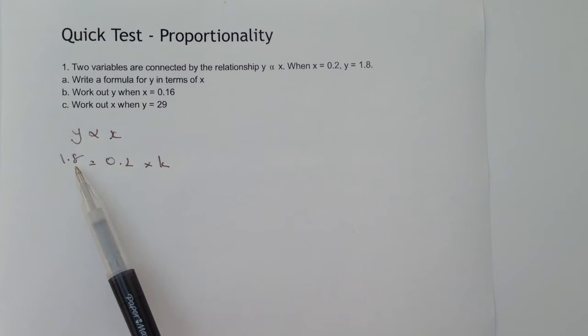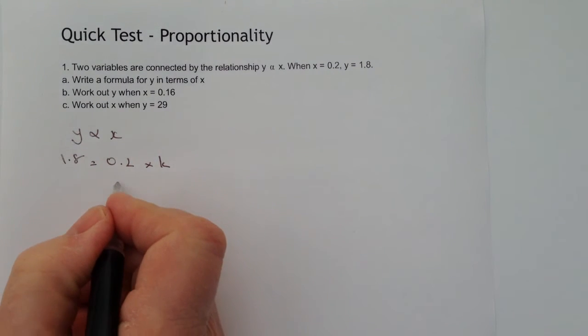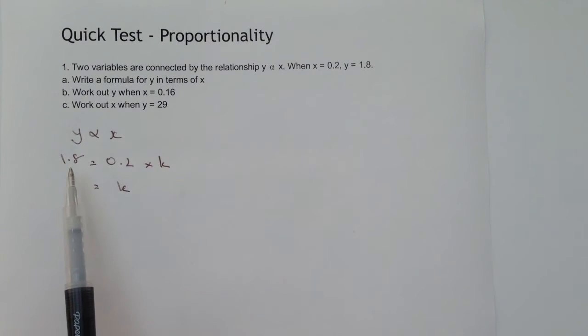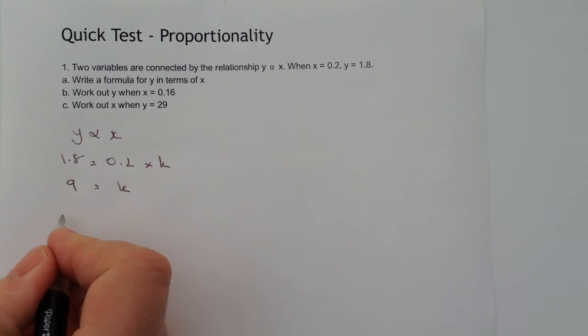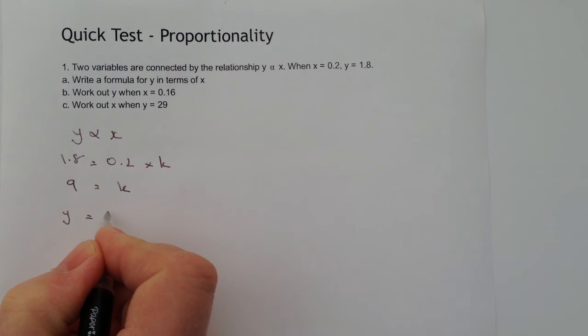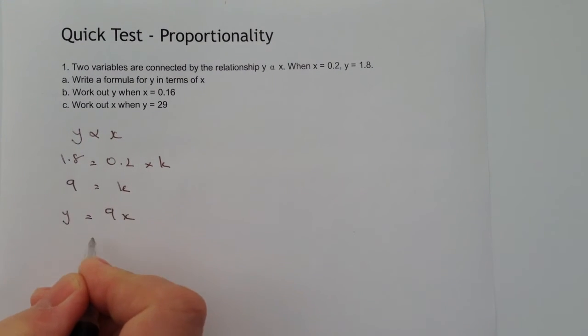However you work this out, a little bit of algebra, you'll work out that k equals the same as 1.8 divided by 0.2, and that means the value of k equals 9. If you're not sure about how I've got to that, please do have a look at the videos on linear equations, but it allows me now to write this out as y equals 9x, and that's the answer to the first question, question a.